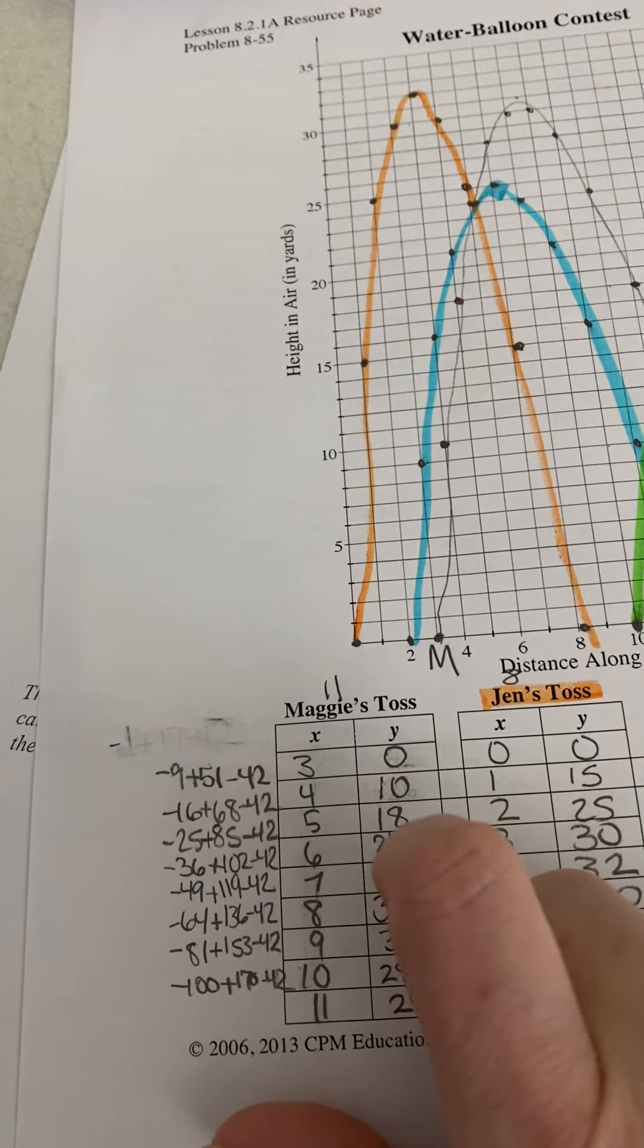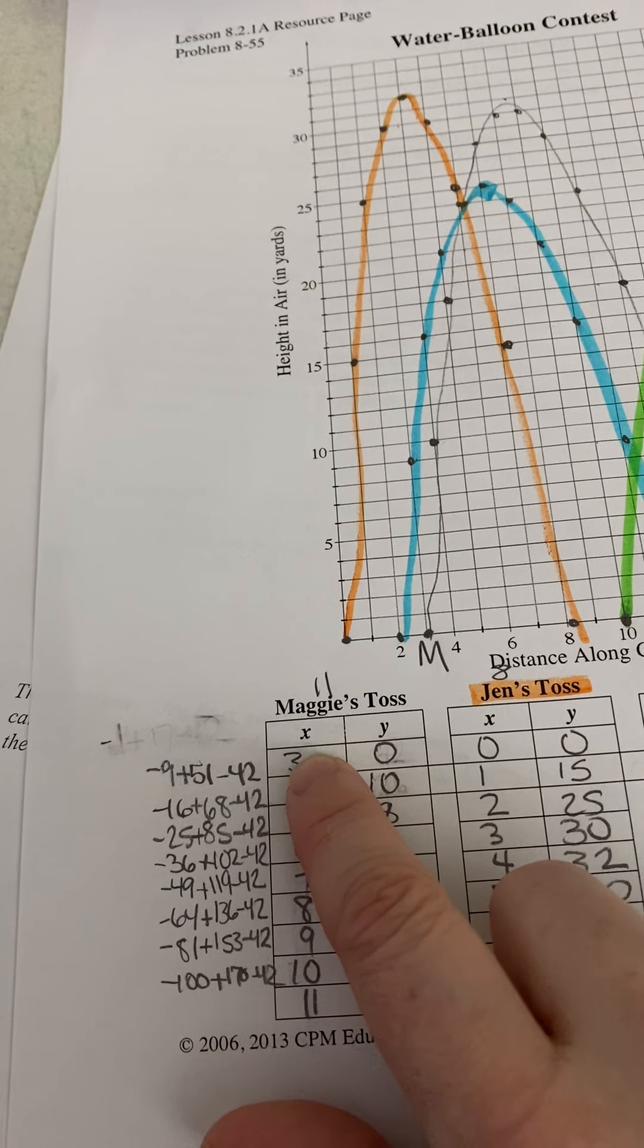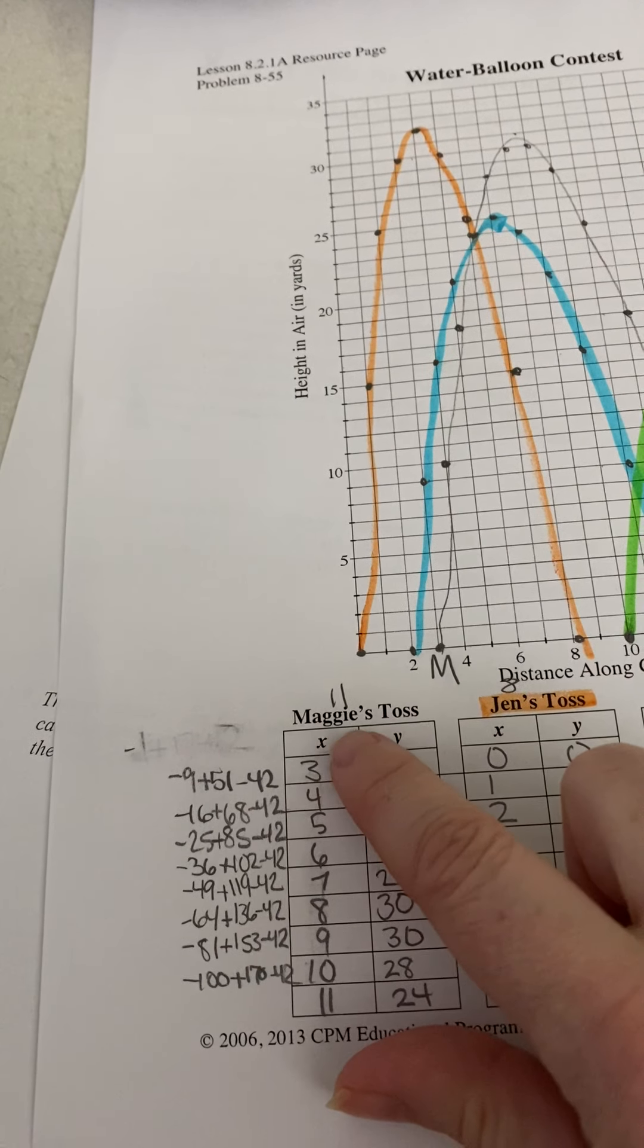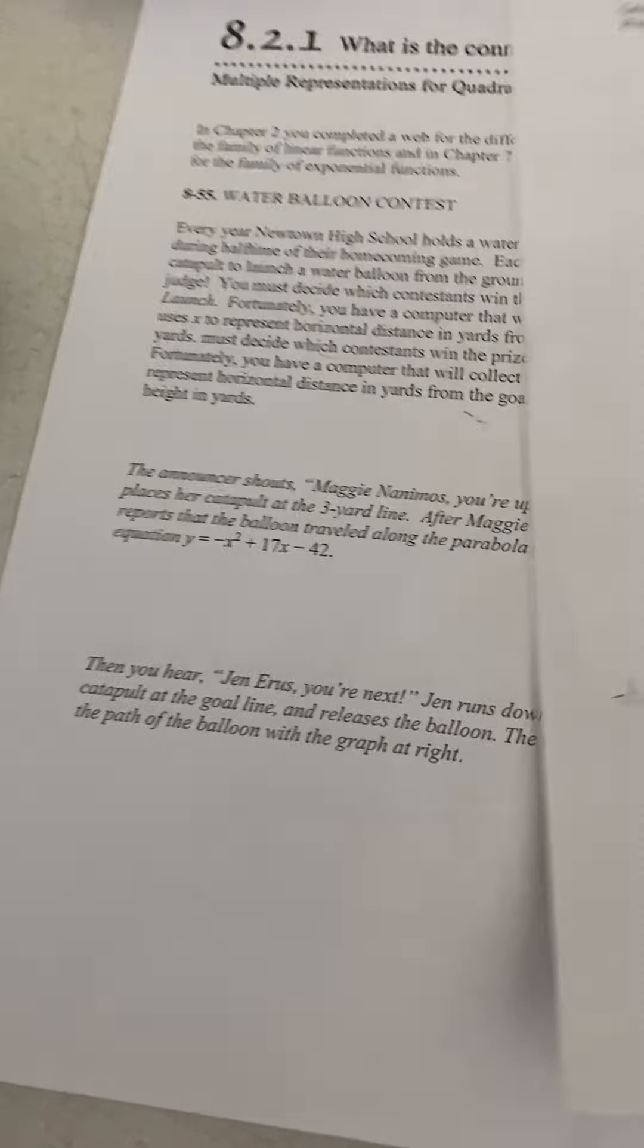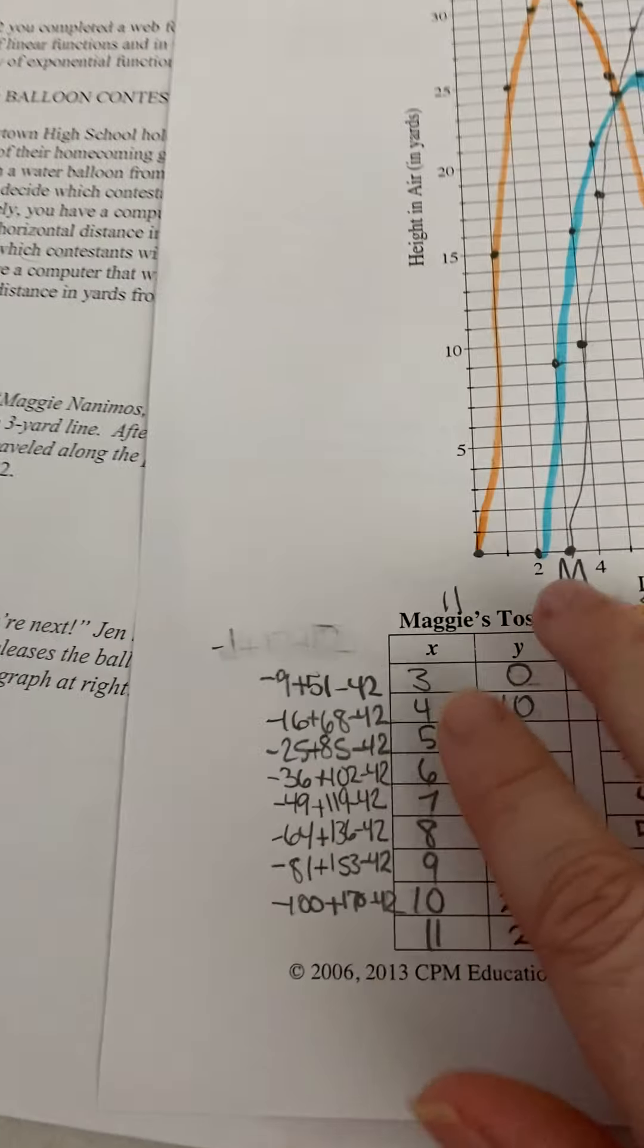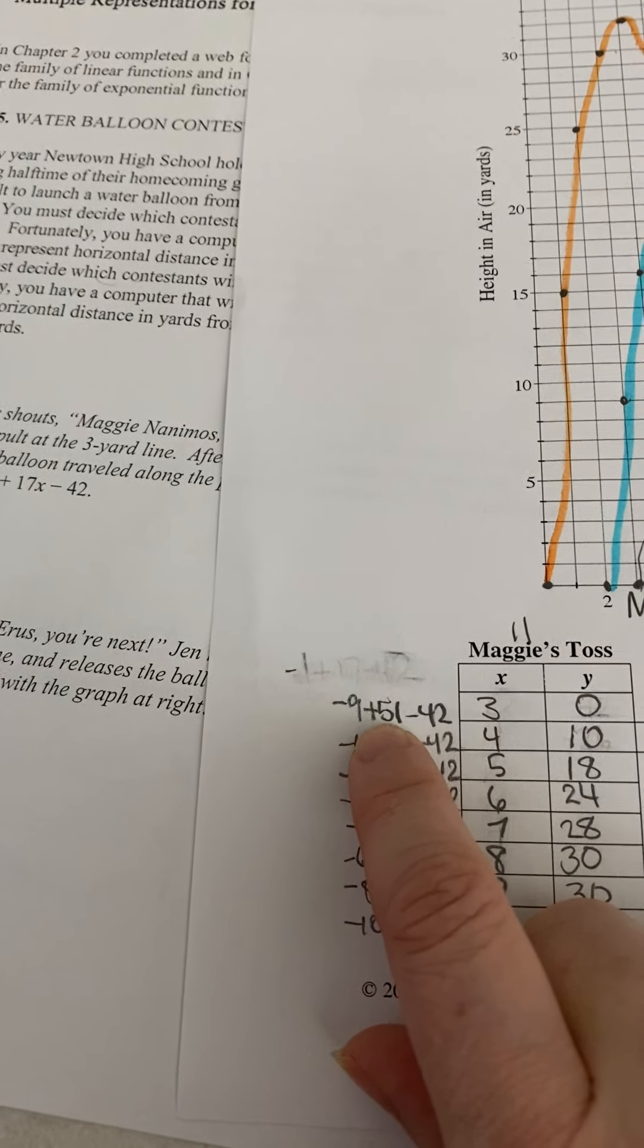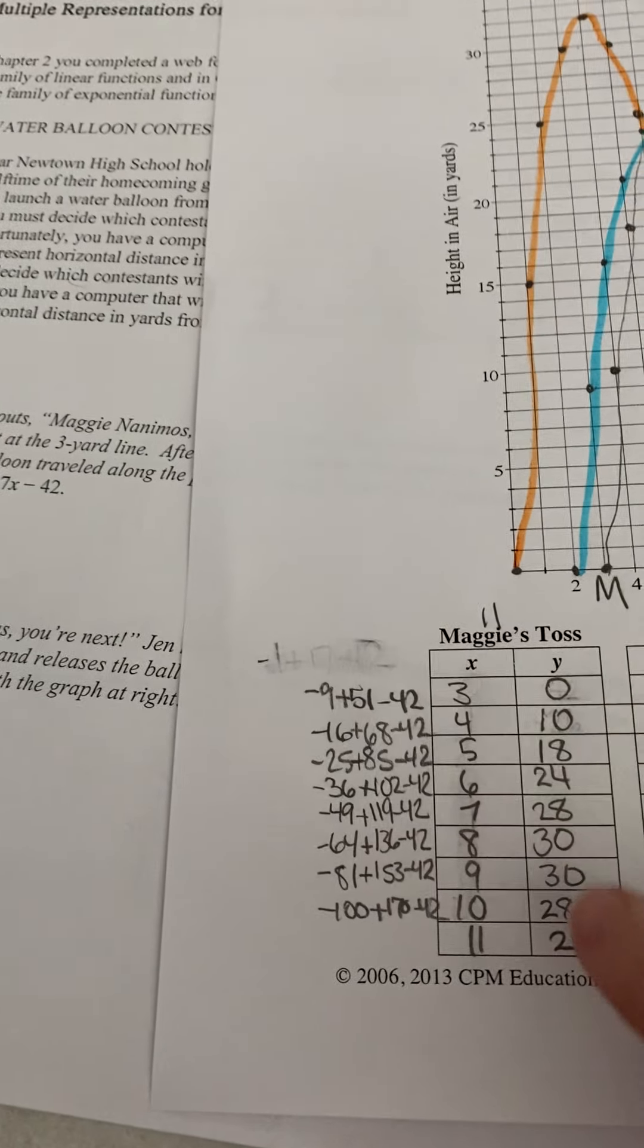From there, what you're going to do is plug in each of these numbers. I started with three because we know that's where she started, and then I just went down and filled up the whole thing until I got to 11. Now, her equation, negative x squared plus 17x minus 42. That's what this is, negative x squared plus 17 times x minus 42, and solved that for all of them.